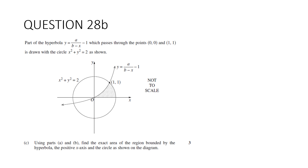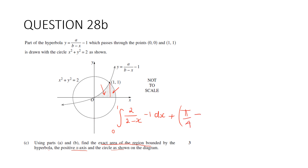Part C: find the exact area of the region bounded by the hyperbola, the positive x-axis, and the circle. This is the integral from 0 to 1 of 2/(2 − x) − 1 dx, plus the sector area from part A (π/4 − 1/2).